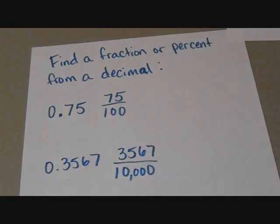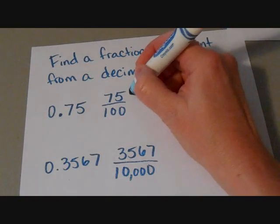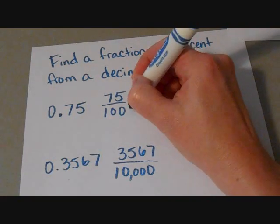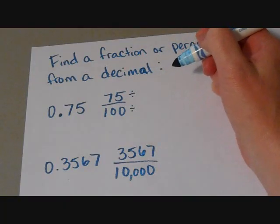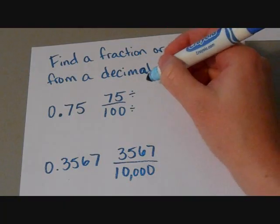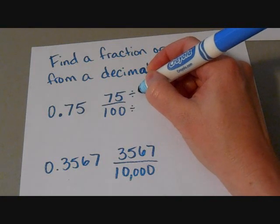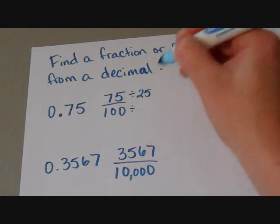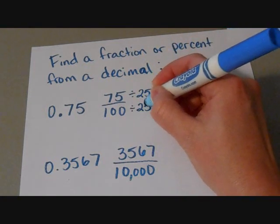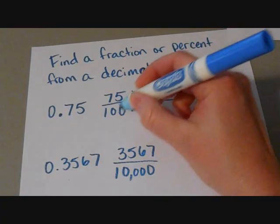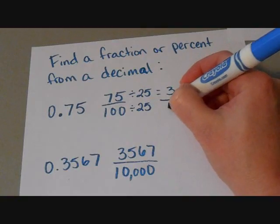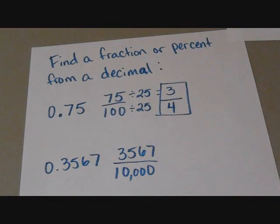But let's go back to this one because for this one what we want to do now is reduce this fraction. And to reduce, you simply want to find a number that you can divide both of these numbers by evenly. So in this particular case, because I picked a nice easy one for us to start with, we can divide by twenty-five. So seventy-five divided by twenty-five is three. And one hundred divided by twenty-five is four. So our fraction is three-fourths.